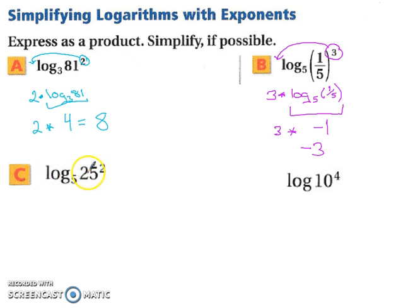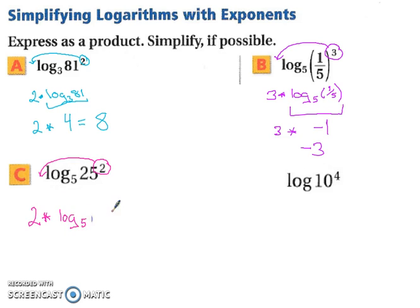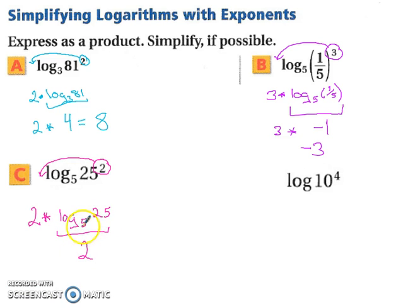Log base 5 of 25 to the second power: take the 2 and bring it down in front, giving 2 times log base 5 of 25. Log base 5 of 25 equals 2, because 5 squared is 25. So we have 2 times 2, which equals 4.